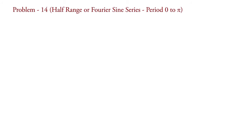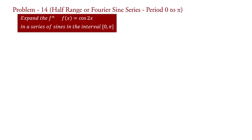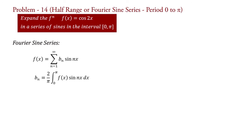The problem is: expand the function f(x) = cos 2x in a series of sines in the interval 0 to pi. The formula for the sine series is f(x) = summation n=1 to infinity of b_n sin(nx), where b_n = (2/π) integral from 0 to pi of f(x) sin(nx) dx.